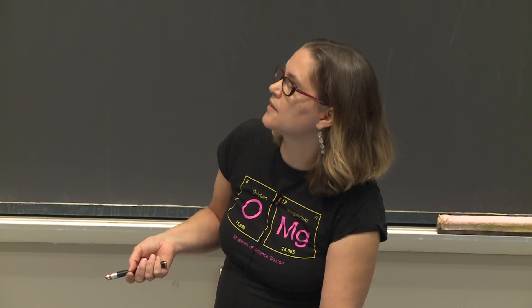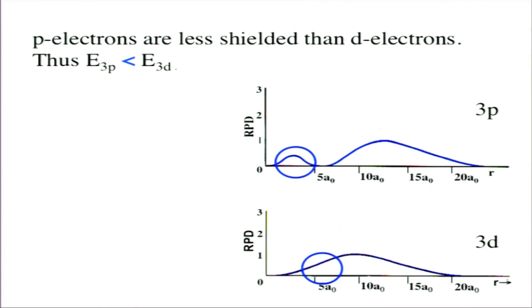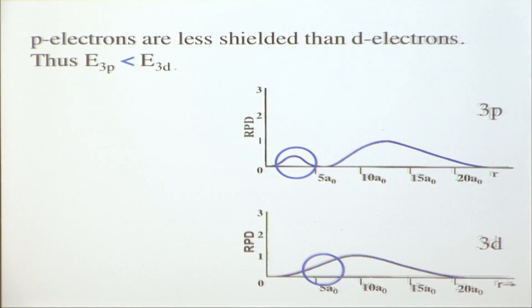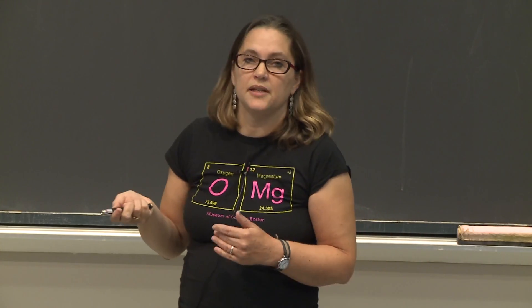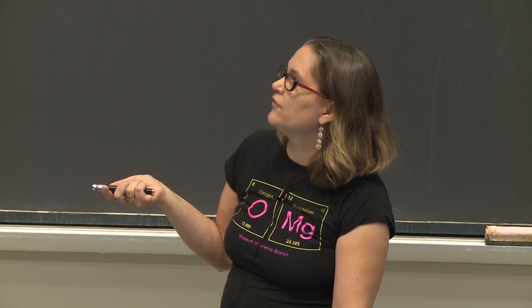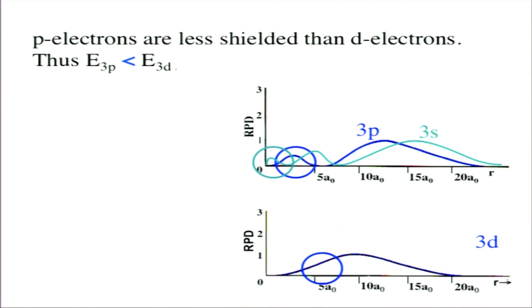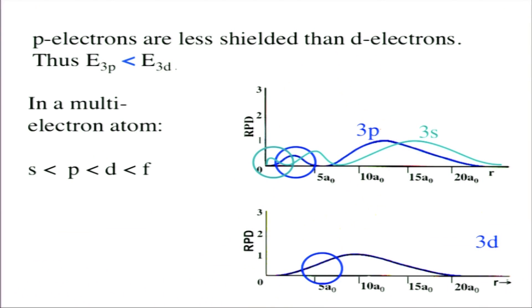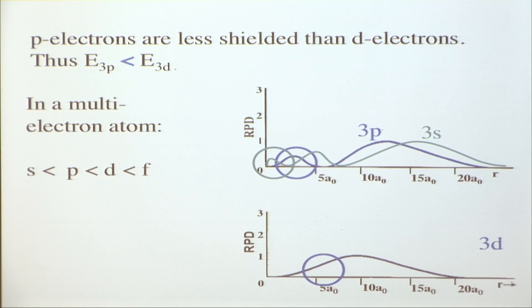For the n equals 3 system: p electrons are also less shielded than d electrons, despite the most probable radius being longer for p than for d. But near the nucleus there's a higher probability of electrons being present with p than with d, so p is less shielded and lower in energy. Adding s, it has the most probability of being close. So for a multi-electron atom: s is lower than p, p lower than d, d lower than f — due to shielding.